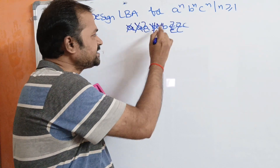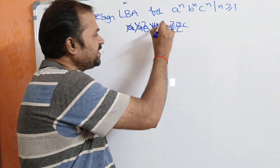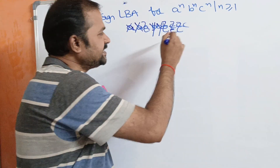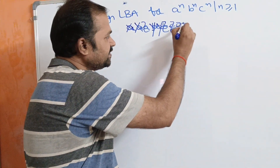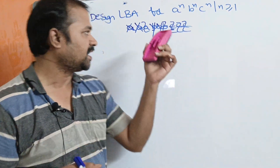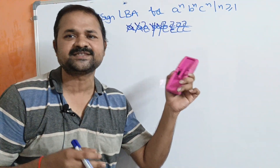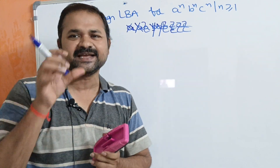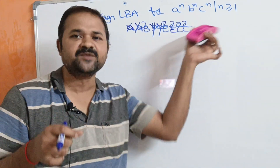Replace this A by X. Move right till we get Y, then till we get B. Replace B by Y. Then move towards the right till we get Z. After Z, we have C. So replace this C by Z. This is the logic. It is similar to the Turing machine only, but there is some difference at the end marker.